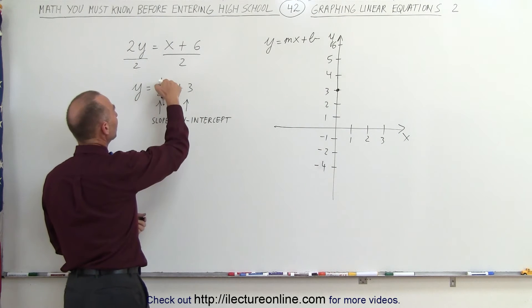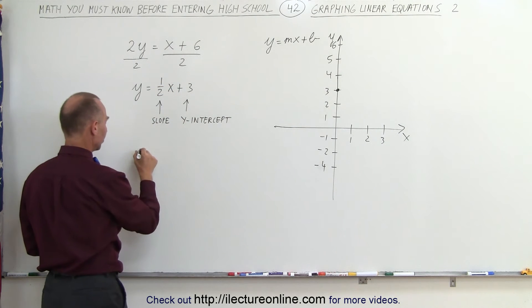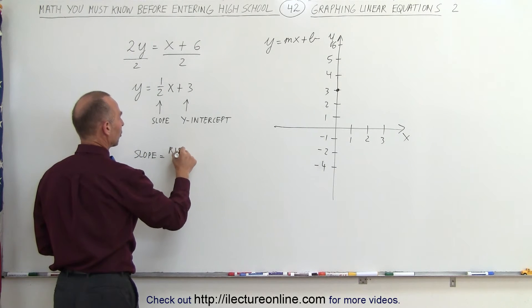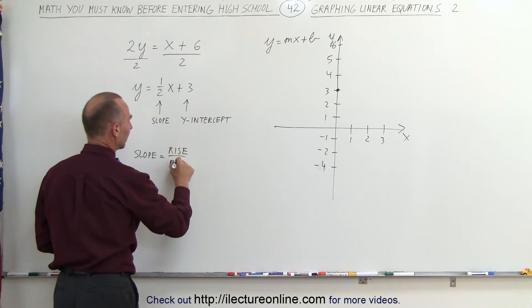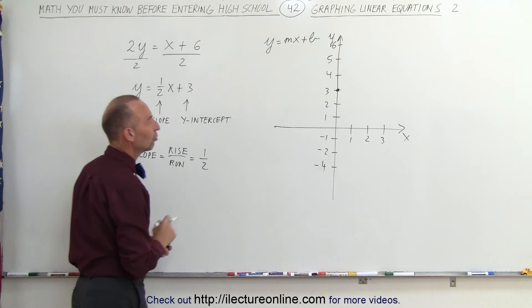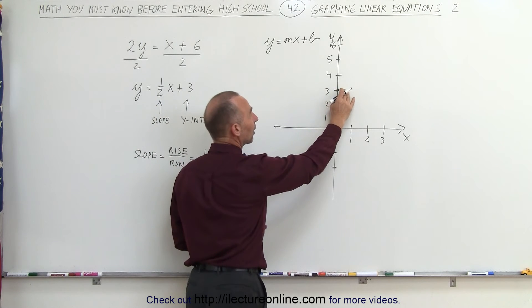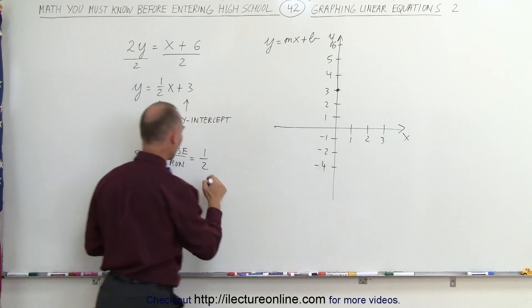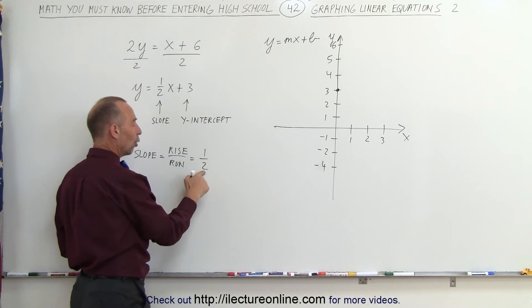I also know that the slope is equal to 1/2. Now, by definition, the slope is equal to the ratio of the rise divided by the run. In this case, the rise is equal to 1 and the run is equal to 2, which means starting from the point where it crosses the y-axis, which is called the y-intercept, I'm going to go up 1 and over 2.